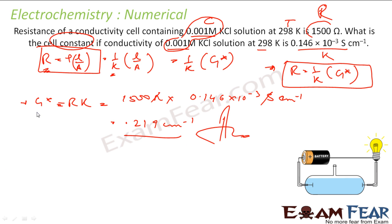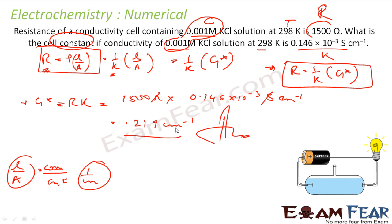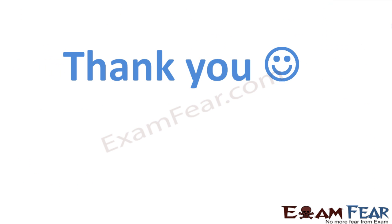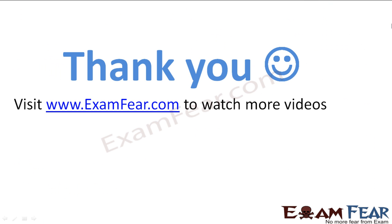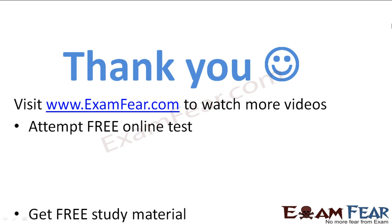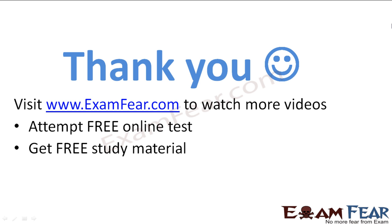If you put length in centimeters and area in centimeters squared, the unit comes out to be 1 per centimeter — and that is the cell constant unit. Visit examfear.com to watch more videos, attempt free online tests, get pre-study materials, and find tutors and mentors. Thanks once again.